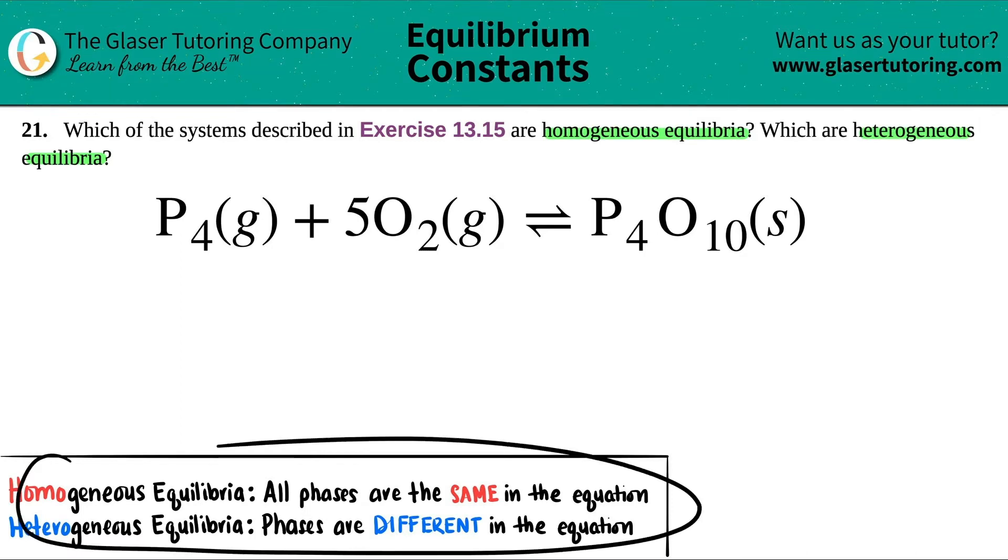Here I wrote down the rules. Homogeneous and heterogeneous, they kind of go back to when we learned about homogeneous mixtures and heterogeneous mixtures. Homogeneous mixtures, it was all one unit in which you couldn't see the different compounds. Heterogeneous mixture was when you could see the different compounds in there. So the idea kind of implies here.